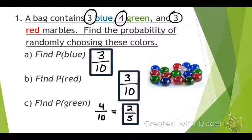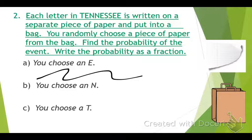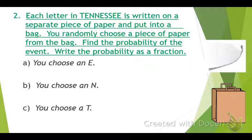Does that make sense what probability means? We're going to do a few more examples. Second scenario: each letter in Tennessee is written on a separate piece of paper. If I put all of those into a little bag, we are trying to find the probability of randomly choosing different letters. We are doing theoretical probability, because we are just assuming what, in theory, would happen.